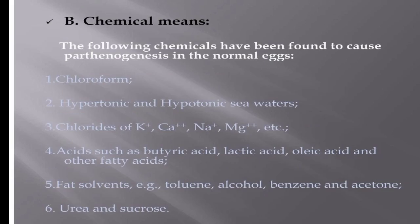Chemical means that can cause artificial parthenogenesis include chloroform, hypertonic and hypotonic sea water, chlorides of calcium, potassium, and magnesium, some acids such as butyric acid, lactic acid, oleic acid and other fatty acids, fat solvents such as toluene, alcohol, benzene, and acetone, as well as urea and sucrose.